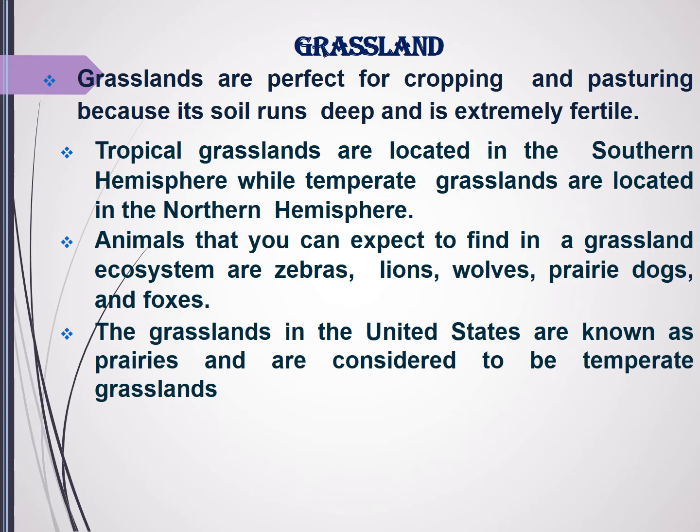Animals found in the grassland ecosystem include zebras, lions, wolves, prairie dogs, and foxes. The grasslands in the US are known as prairies and are considered to be temperate grasslands.